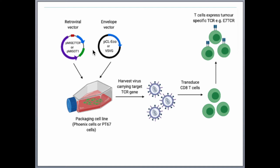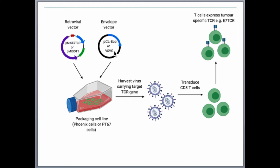We co-transfect these two vectors — retroviral vector and envelope vector — one at a time into a packaging cell line. The packaging cell line used was Phoenix ECO cells, a second-generation gamma retrovirus packaging cell line derived from 293T cells. This allows retrovirus packaging, so the retrovirus containing TCR specific to the target is harvested and used to transduce CD8 T cells — particularly naive CD8 T cells maintained by IL-7. IL-7 maintains survival and drives proliferation of naive T cells. These naive CD8 T cells then express TCR specific to the target, and in the future, these naive TCR T cells would be re-infused into patients for in vivo expansion and killing of tumors.